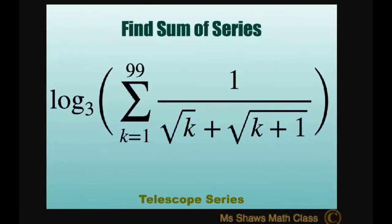Hi everyone. We're going to find the sum of the series. We have log base 3 times the quantity of the sum from k equals 1 to 99 of 1 divided by the square root of k plus the square root of k plus 1.